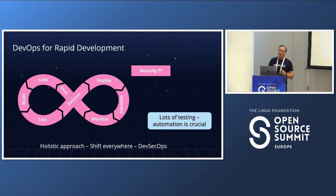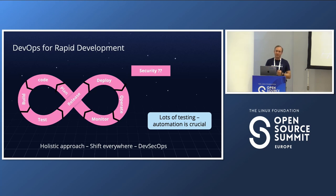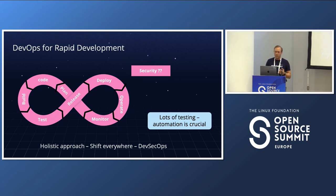If you look at the DevOps chart, you don't see security listed at all — and in some sense that's actually a good thing. We don't write it down separately because the idea is that security is everywhere throughout the DevOps process. This is the holistic approach, also called 'shifting everywhere,' which ties well with DevSecOps.